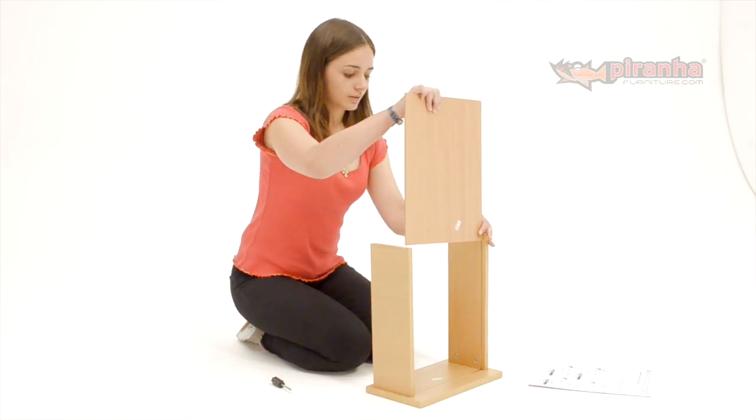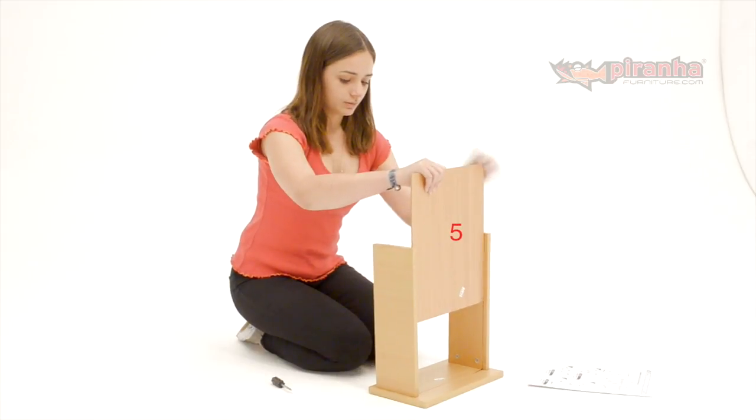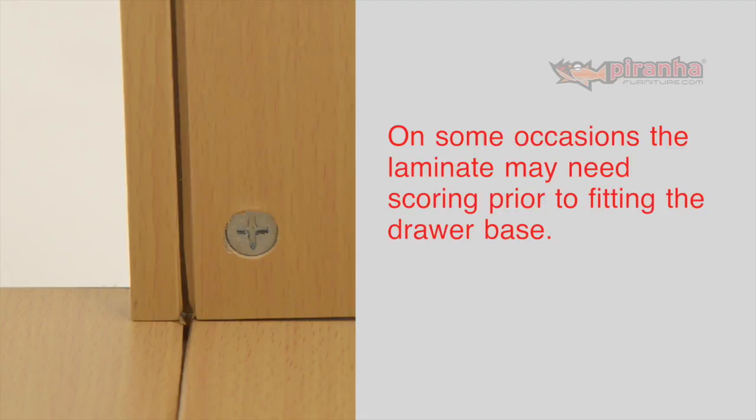Step 2. Now slide the thin board that will be the base of the drawer along the pre-cut grooves in the drawer sides. The laminate deliberately overlays the slots to give a neat finish.